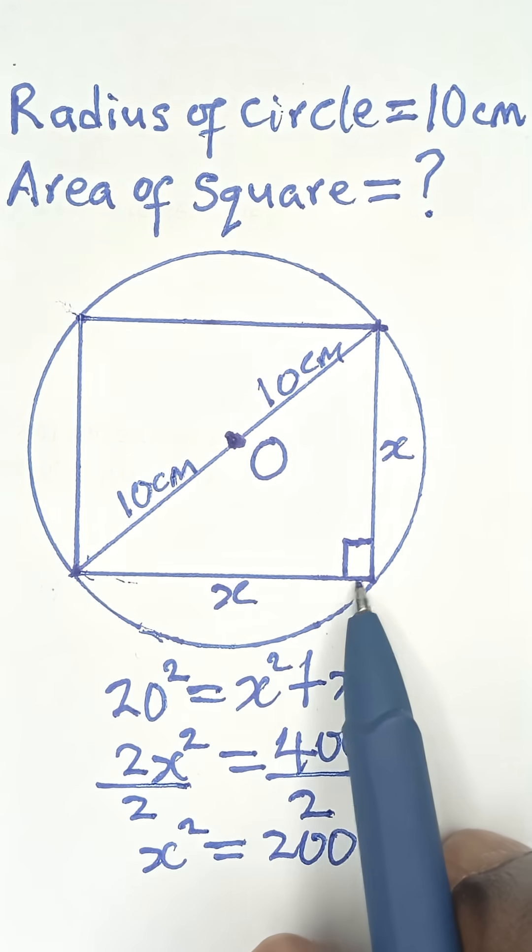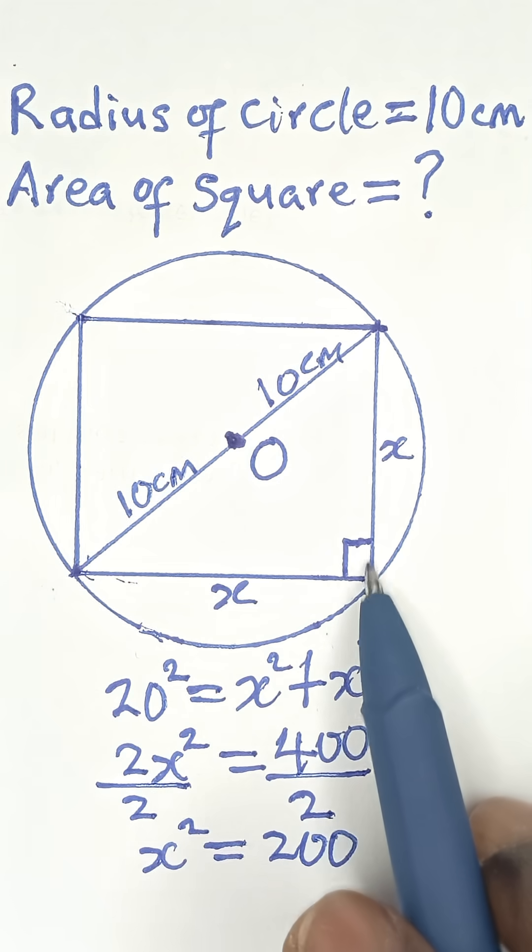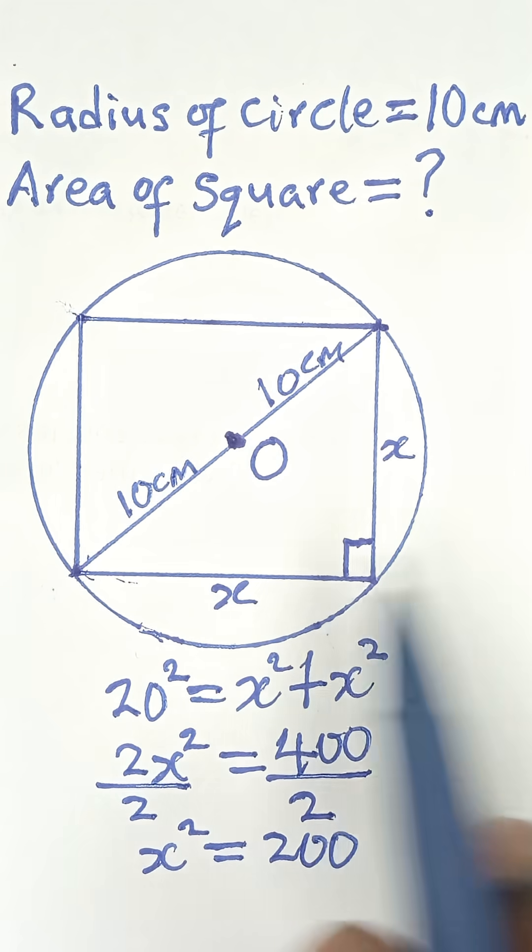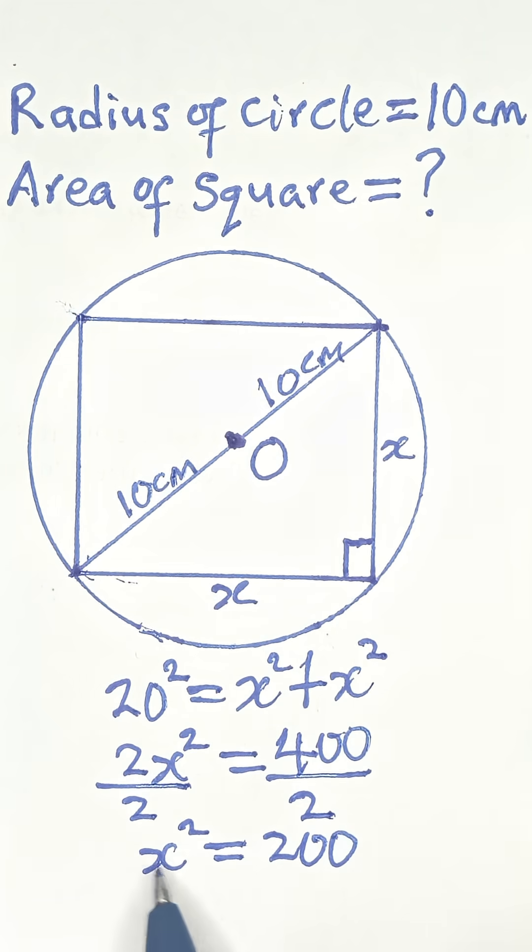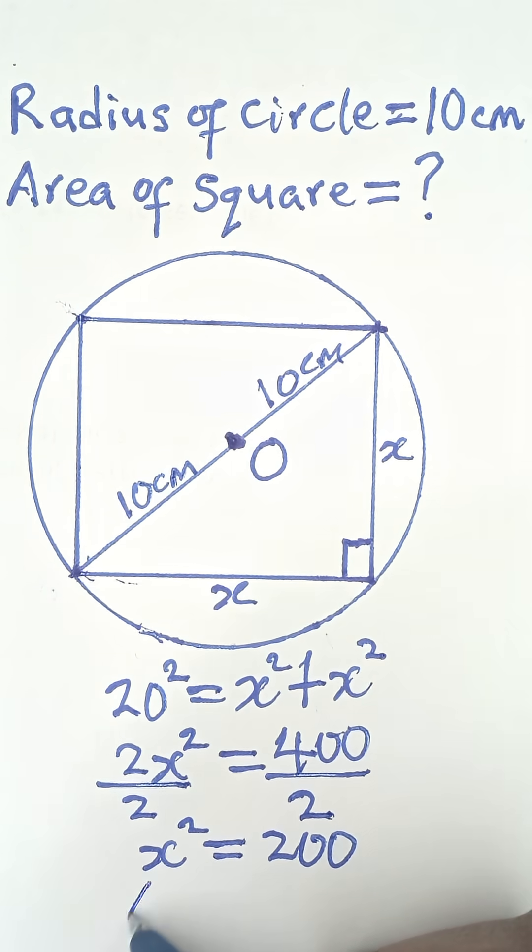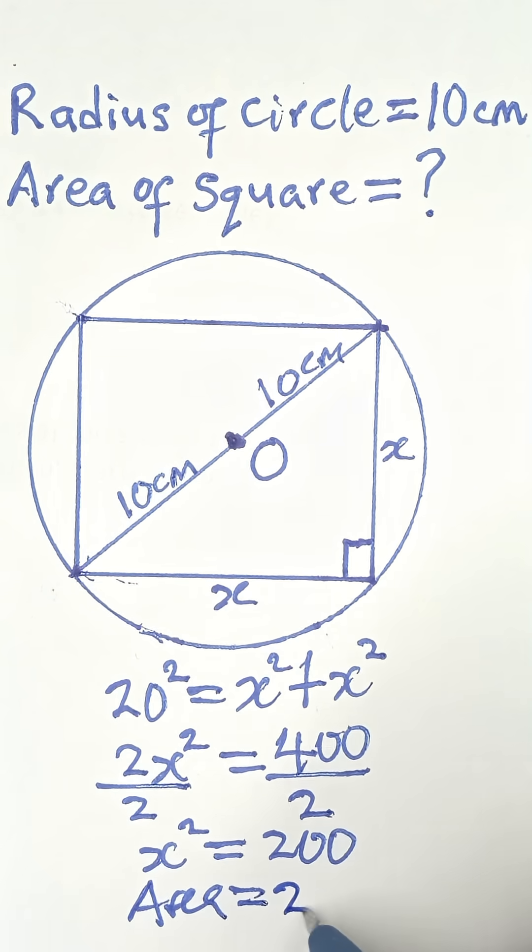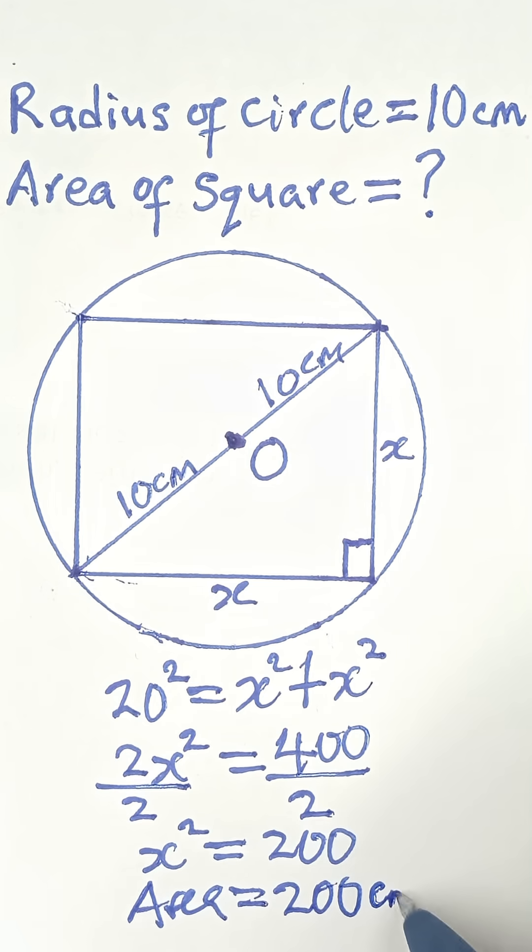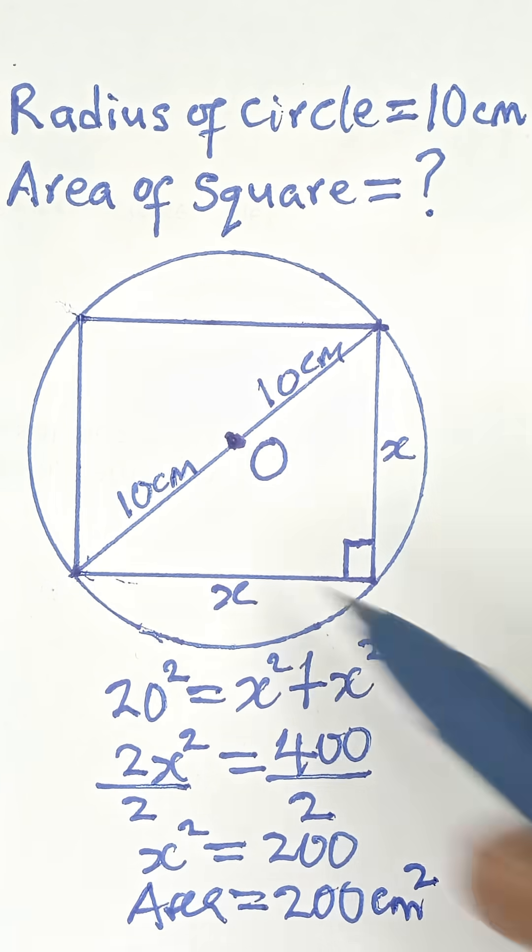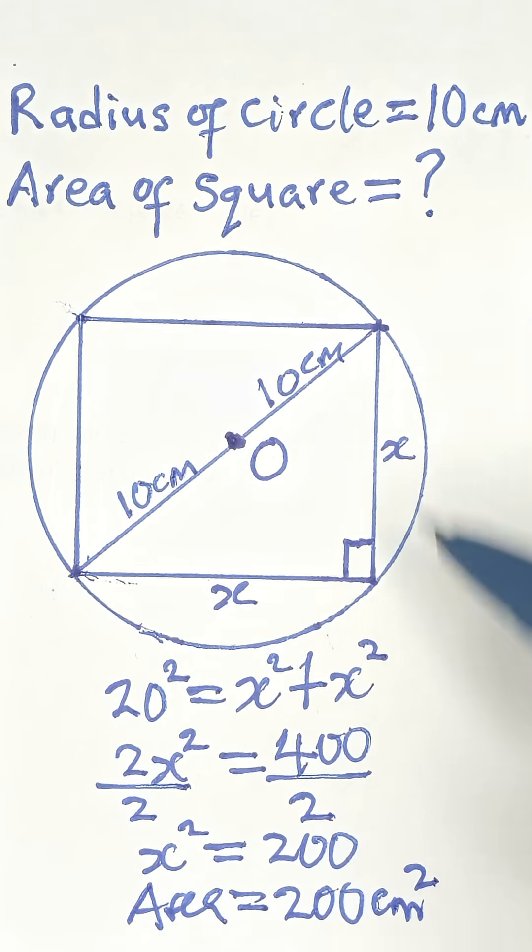Don't forget, the area of a square is the length of the square multiplied by the length of the square, so length square is the area of a square. That means we already have the length square. x square is also the same thing as the length square of the square. So from there we have area of the square is equal to 200 centimeter square.